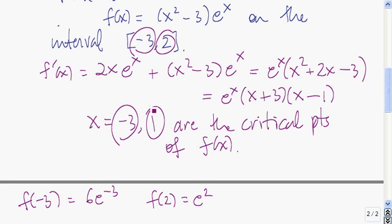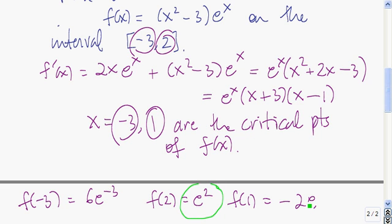The last thing to do is find the function value at the critical point x equals 1. f of 1 is equal to 1 squared minus 3, which is negative 2, times e to the 1 — so negative 2e. The absolute maximum is going to be the largest of these values, and that's e squared. The absolute minimum is going to be the lowest of these function values, and that's negative 2e.